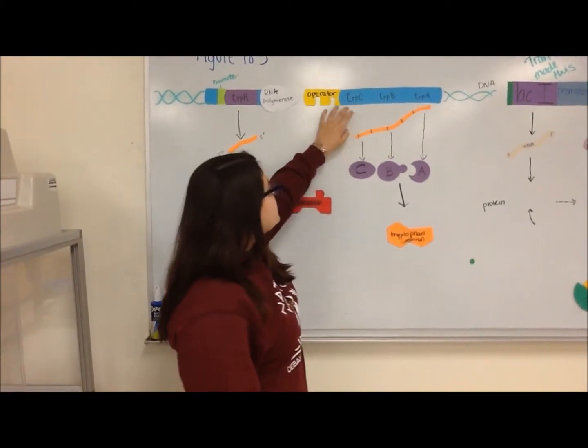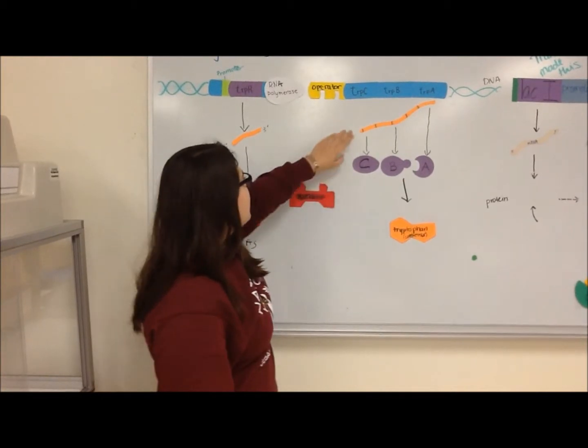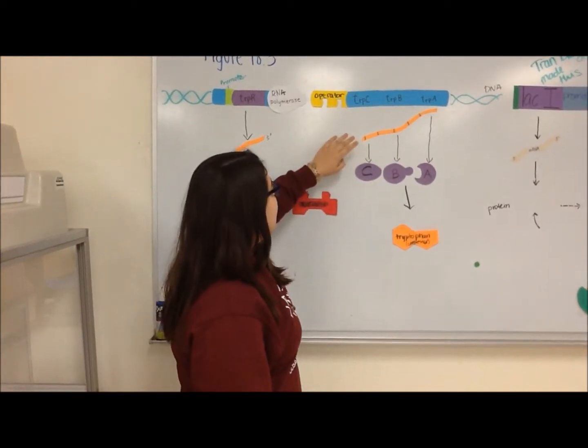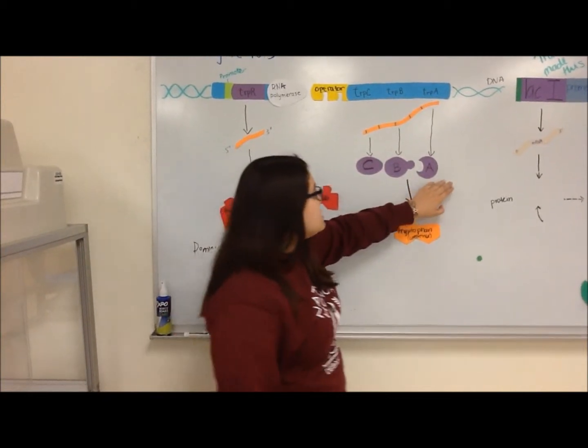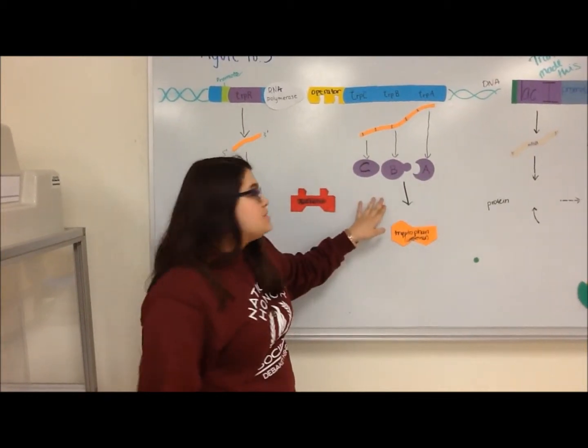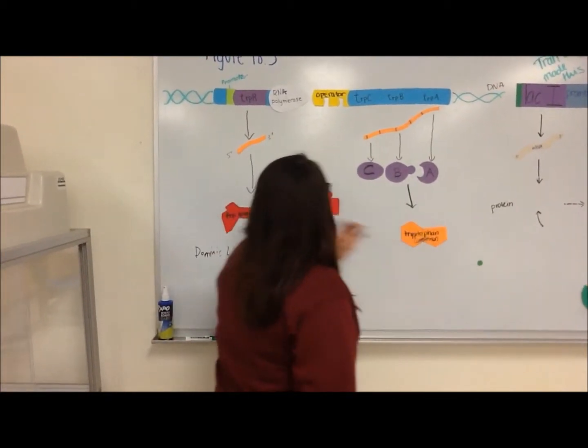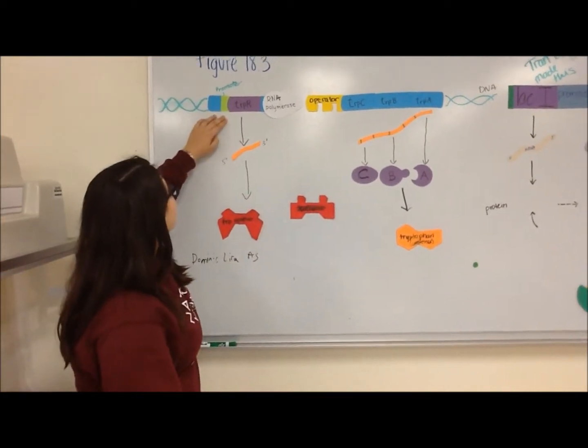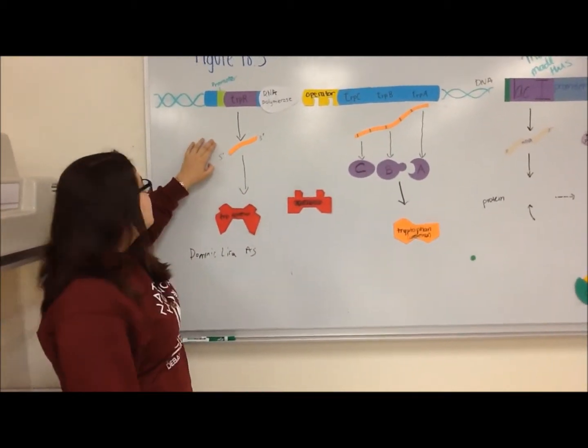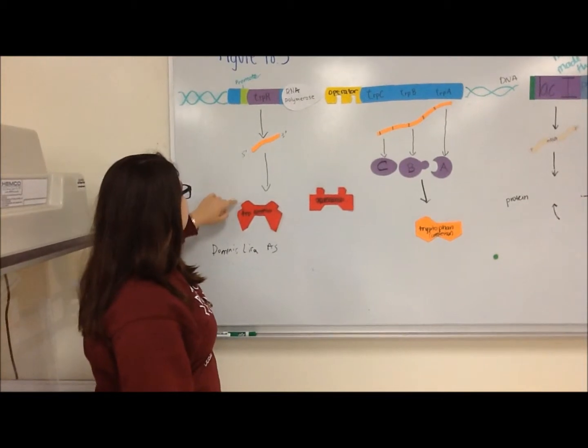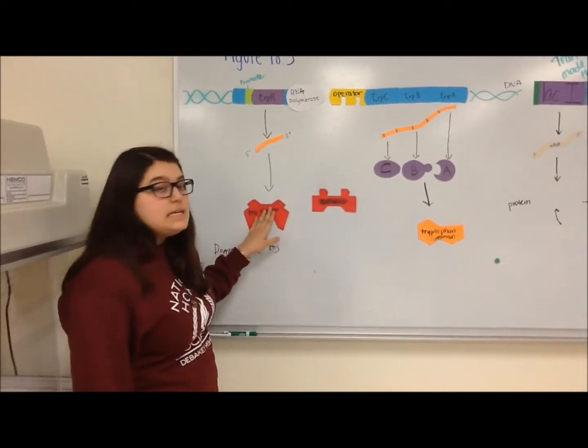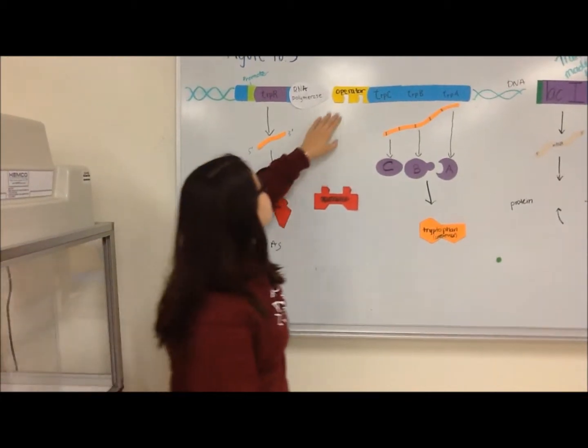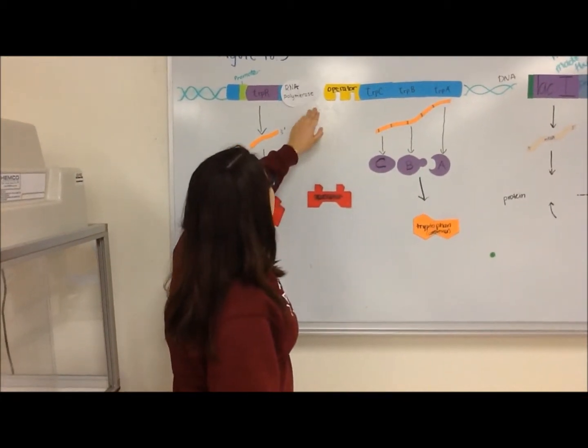The transcription of these genes codes for an mRNA molecule that then codes polypeptide subunits made up of the enzymes necessary for the production of tryptophan. The regulatory gene makes an mRNA molecule that codes for the tryptophan repressor. This tryptophan repressor in its natural state is inactive, which means it cannot bind to the operator and prevent RNA polymerase from continuing transcription.